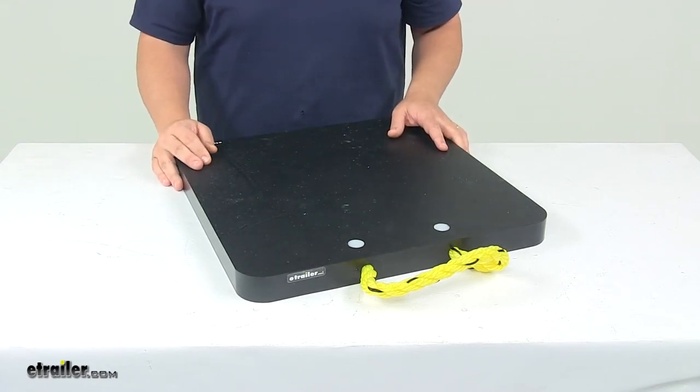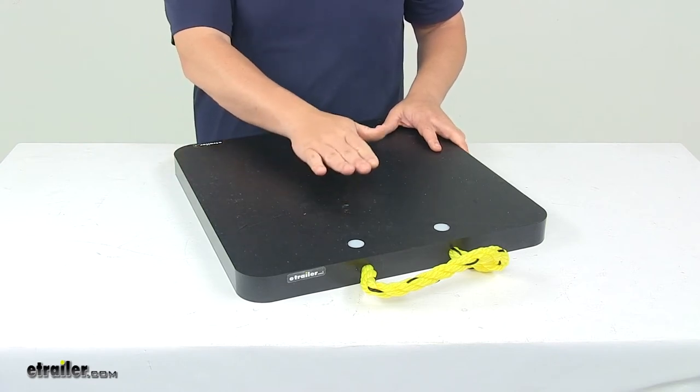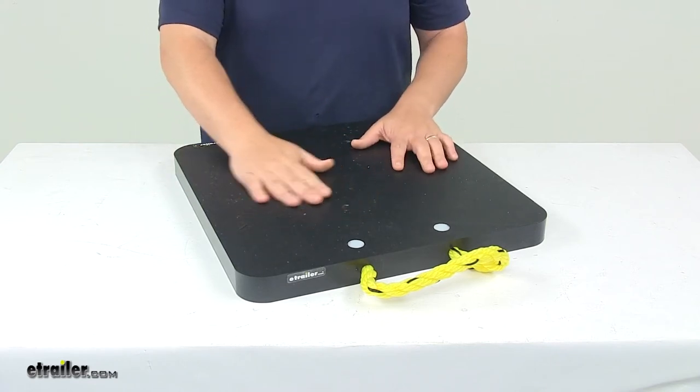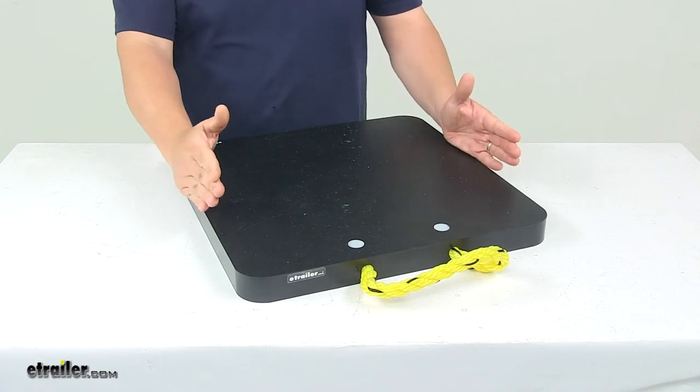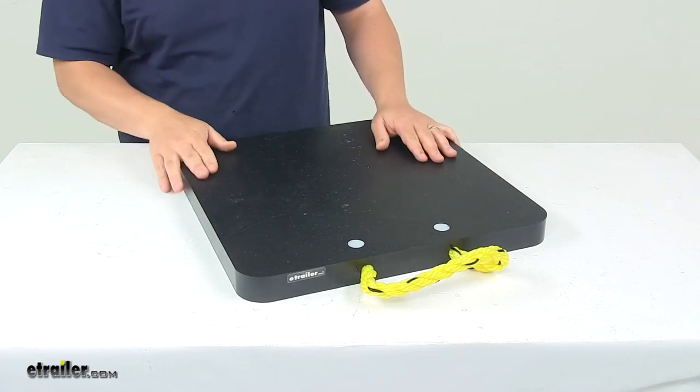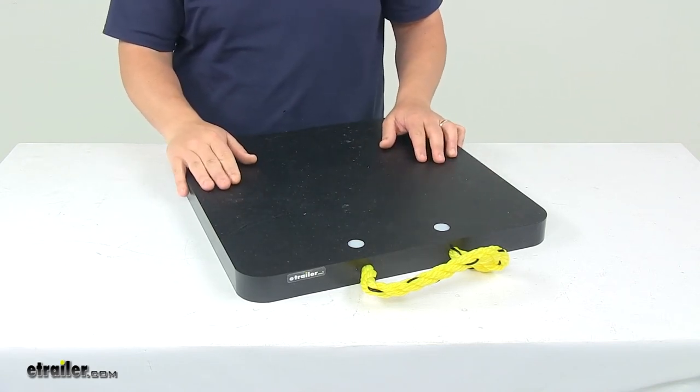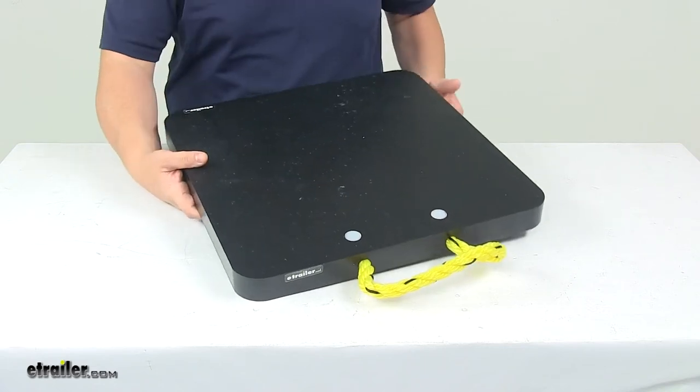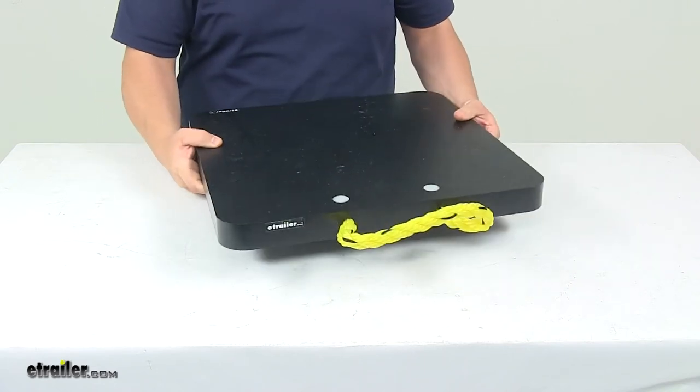It gets placed directly under a stabilizer or outrigger foot. It helps disperse the applied weight for a nice sturdy setup and is constructed from durable HDPE—that's high-density polyethylene. So the unit's built to last.